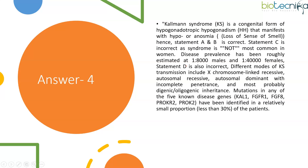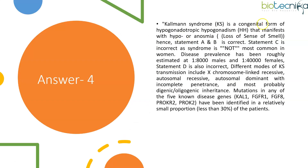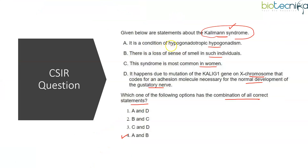The right answer for this question is option 4, where statements A and B are the correct ones. Kallmann syndrome is a congenital form — present right from birth — of hypogonadotropic hypogonadism, meaning the hormones released by the gonads are low. There is also a loss of sense of smell. Statement A says hypogonadotropic hypogonadism — that is correct. Statement B says loss of sense of smell — that is also correct.